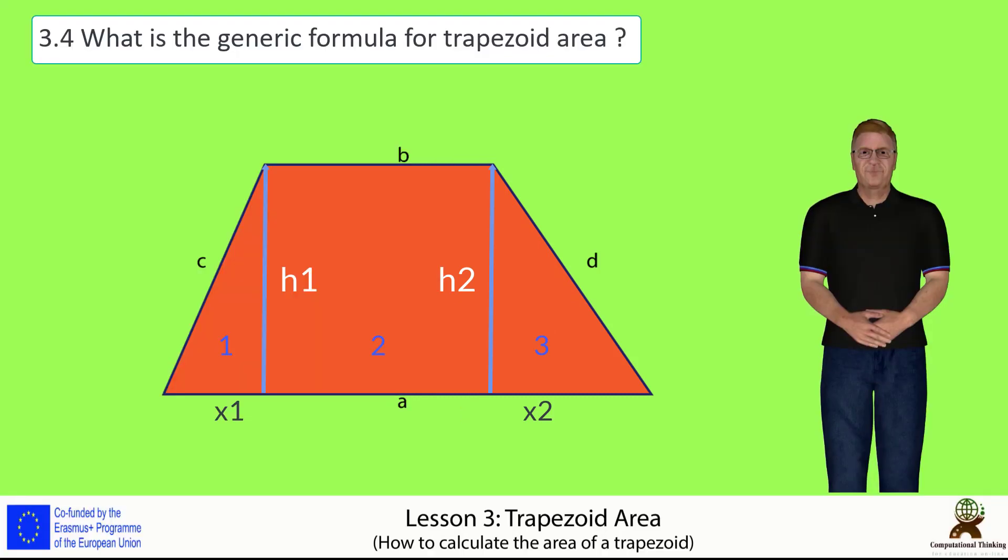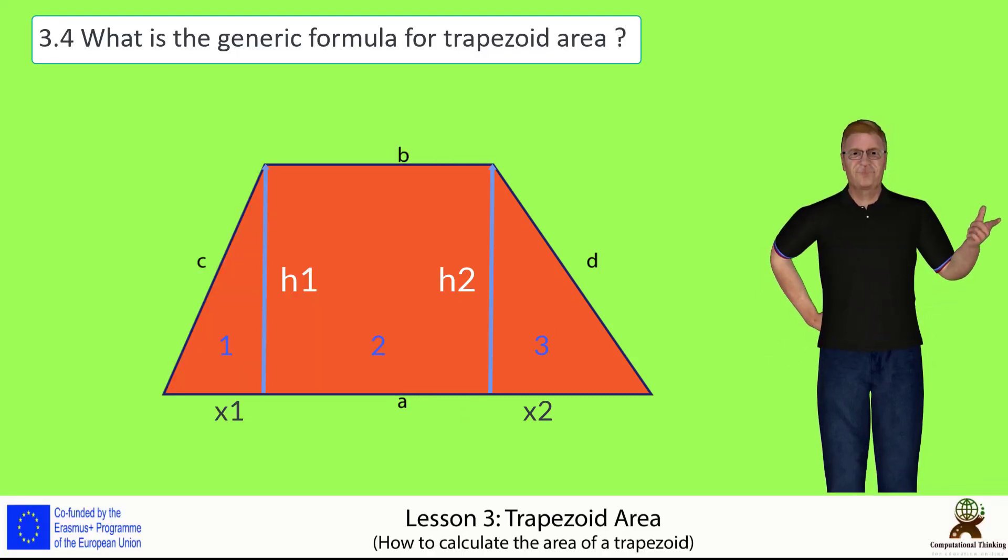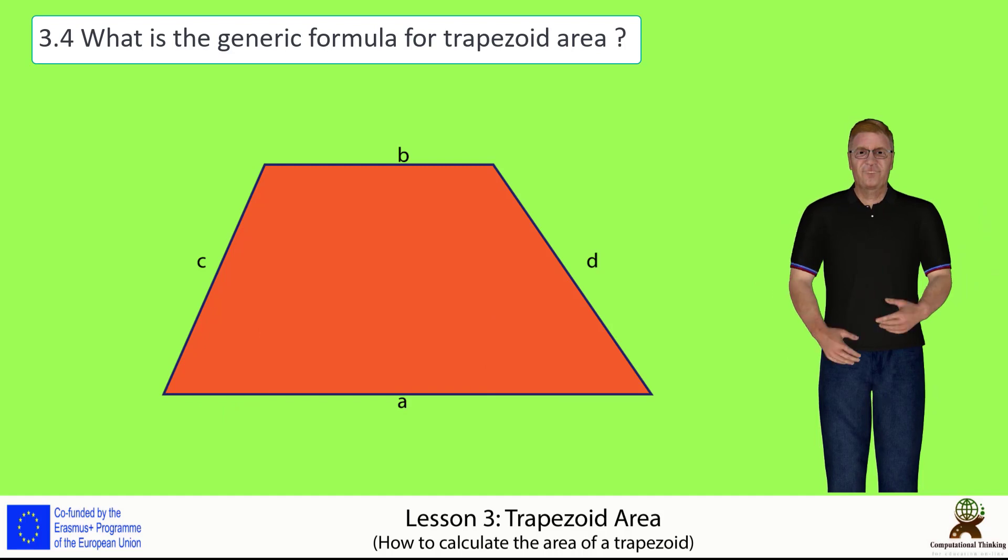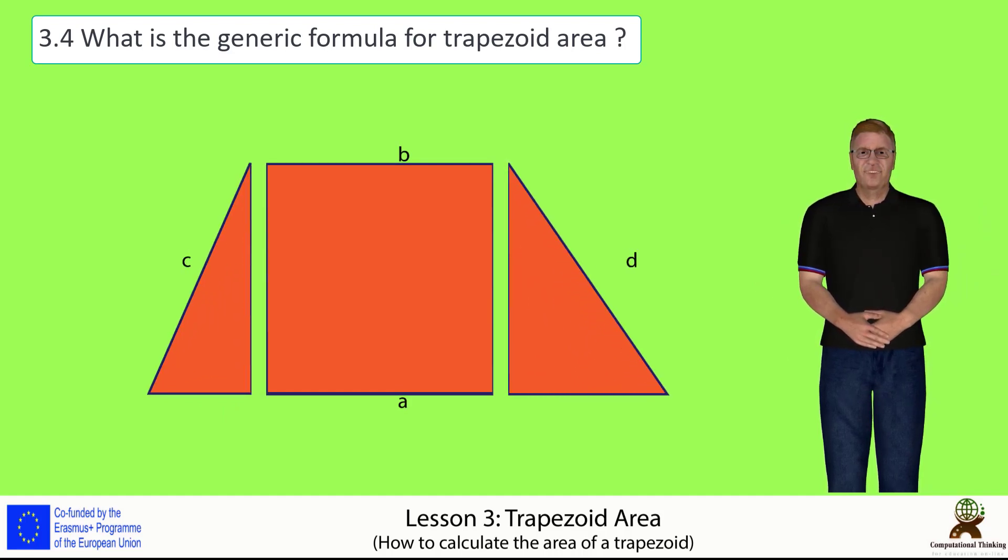Thus, in order to calculate the whole area of the trapezoid, it is enough to calculate the corresponding areas of the two triangles and the one perpendicular rectangle.